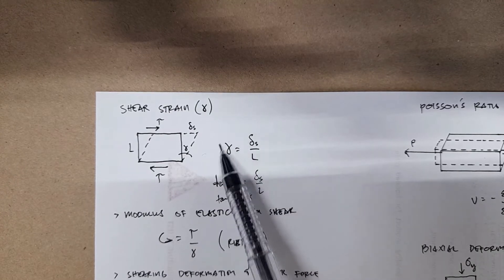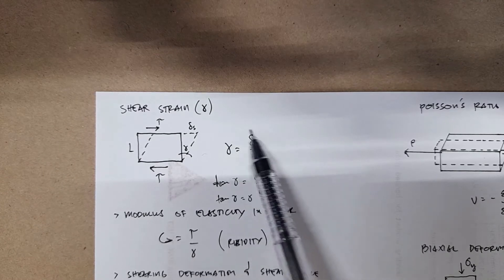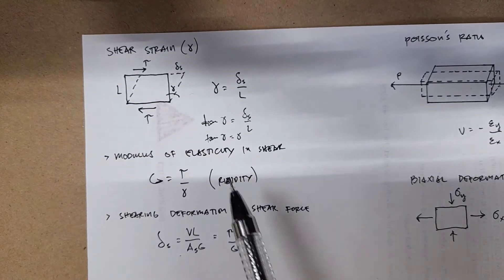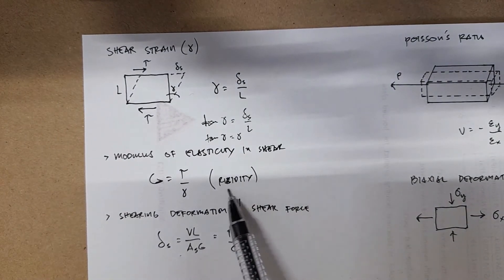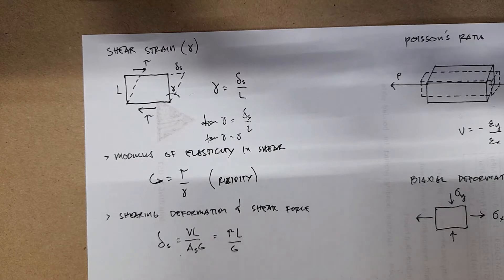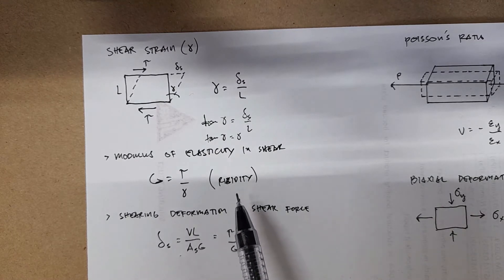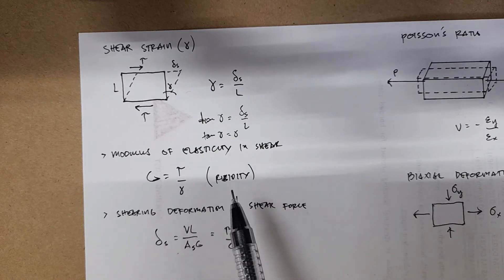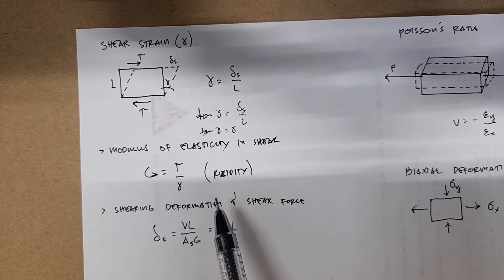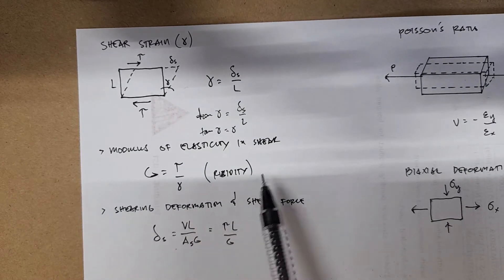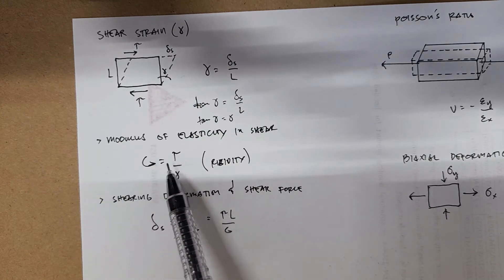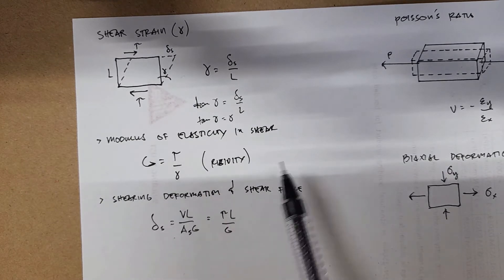That's why shear strain is computed that way. You also have the modulus of elasticity in shear, which is the modulus of rigidity. Remember the modulus of elasticity in normal stress — we have normal strain and E. For shear strain, we have G, the modulus of rigidity, which is just the ratio of your shear stress to your shear strain.